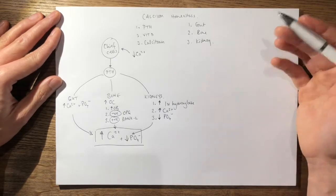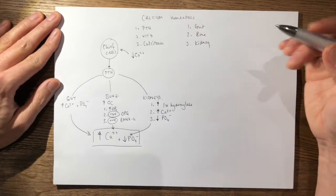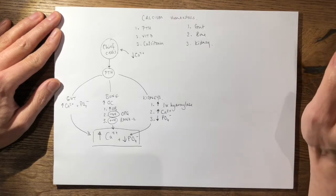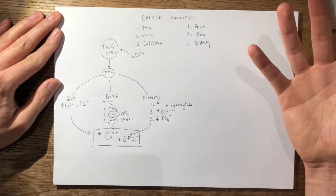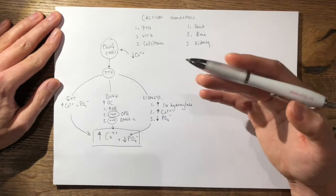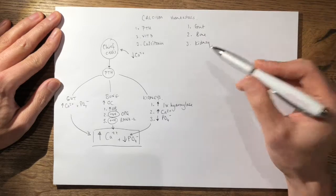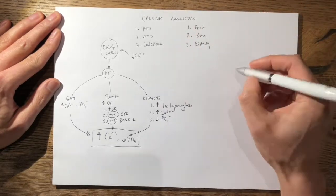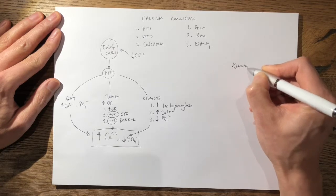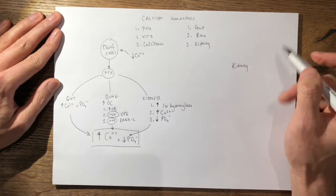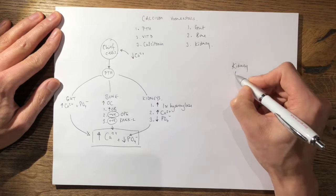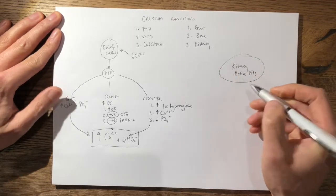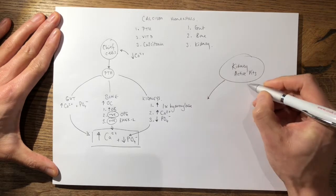The next hormone is vitamin D. Vitamin D is produced by melanocytes from sunlight, and you also get it from your diet. However, the vitamin D from sunlight and diet is in an inactive form. It travels to the liver, where a hydroxyl group is added to make 25-hydroxyvitamin D. That then travels to the kidneys, where another hydroxyl group is added to produce 1,25-dihydroxyvitamin D — the active form. The active vitamin D then has its effect on the same three areas.